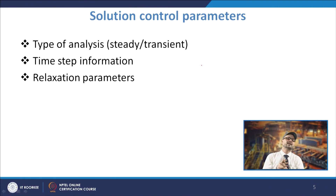For steady state, you specify after how many iterations you are going to stop and see the result. In the case of transient analysis, you specify the time step sizes — in a particular time step, the solver runs for that many iterations. You also provide relaxation parameters, which help in getting a converged solution.